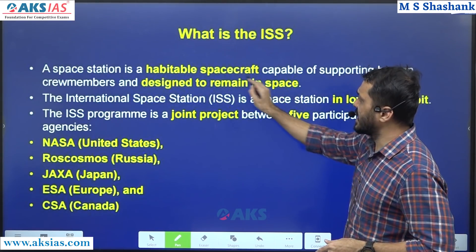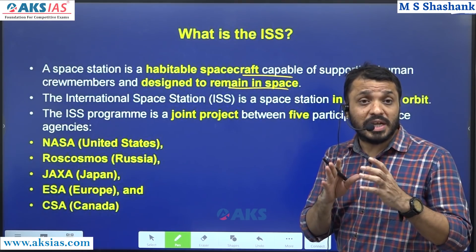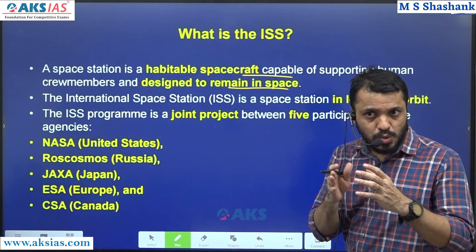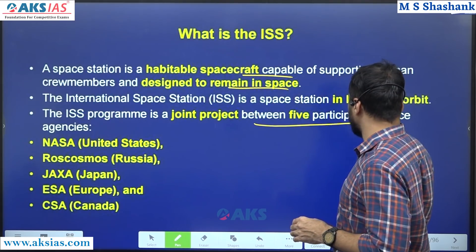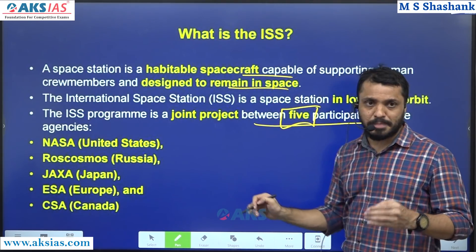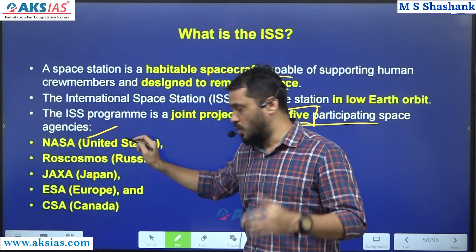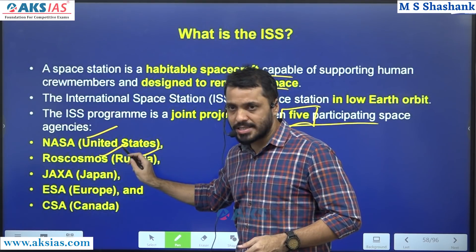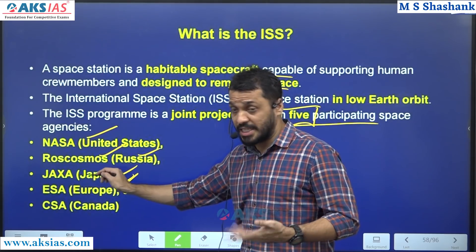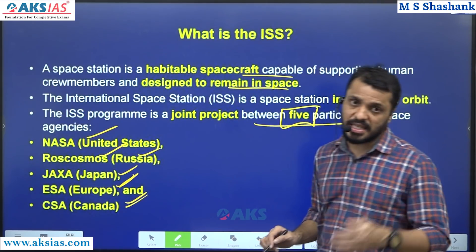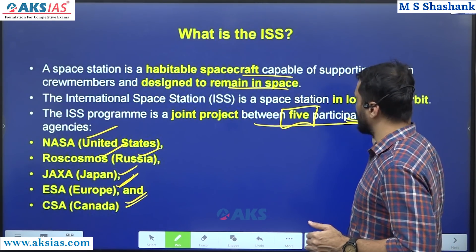This is the International Space Station. We are going to do research in space. What group of countries are going to do this? Five groups of countries: NASA, Space Agency USA; Russia, Roscosmos; Japan, JAXA; European Space Agency, ESA; and Canadian Space Agency, CSA. These are all 5 partner countries.